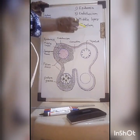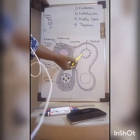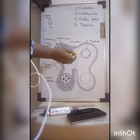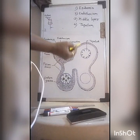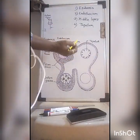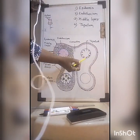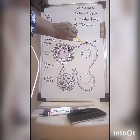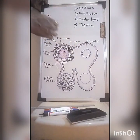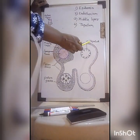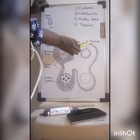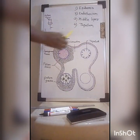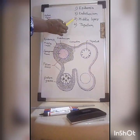The fourth layer is called tapetum. Each pollen sac shows the presence of triangular cells — these are called tapetum. This layer helps in the nutrition of developing pollen grains, and therefore it is also called nutritive tissue. Tapetum forms the innermost layer of the anther. So: the outermost layer is epidermis and the innermost layer is tapetum — these are the four wall layers.